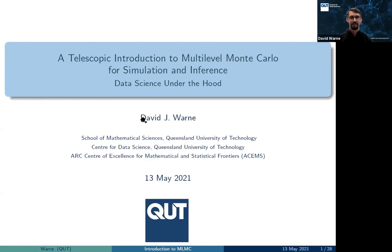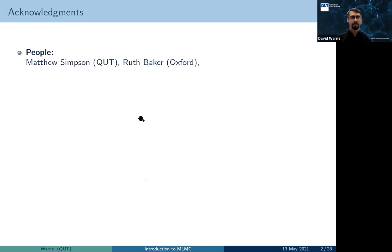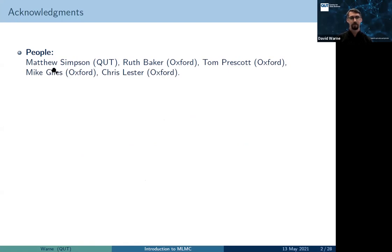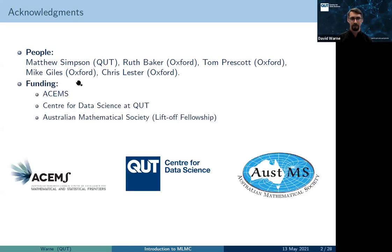This should be fairly friendly. I want to acknowledge some people: Matthew Simpson and Ruth Baker, who are both my PhD supervisors and guided me along a number of related projects. Tom Prescott, a current collaborator working on new techniques with Ruth and Matt. And Mike Giles, who is really the brainchild of multi-level, and Chris Lester — I've had a lot of conversations with these two, particularly in the early stages of this work. Funding from ACEMS, CDS Data Science, and the Australian Mathematical Society, who gave me a liftoff fellowship to work with Tom on some projects.